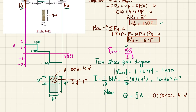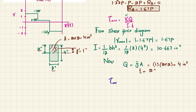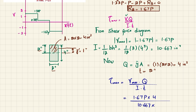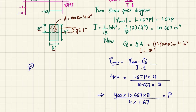The thickness t equals 2 inches. Now putting all values into the shear formula: maximum shear stress equals maximum shear force times Q divided by I times t. So: 400 psi equals 1.67P times 4 divided by 10.667 times 2. Solving for P: P equals 400 times 10.667 times 2 divided by 4 times 1.67, giving P equals 1280 pounds.